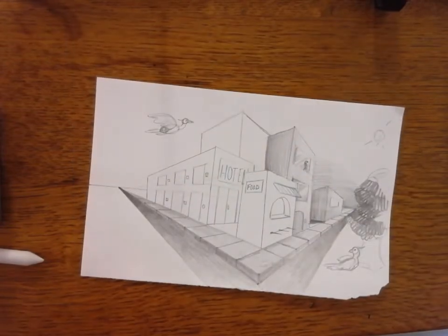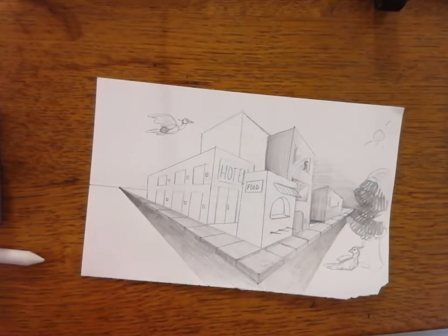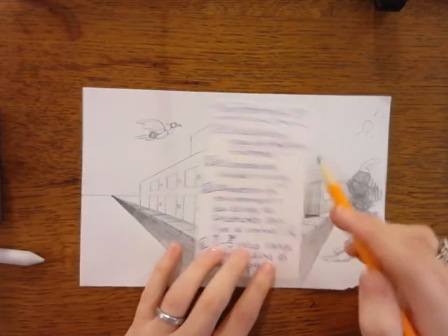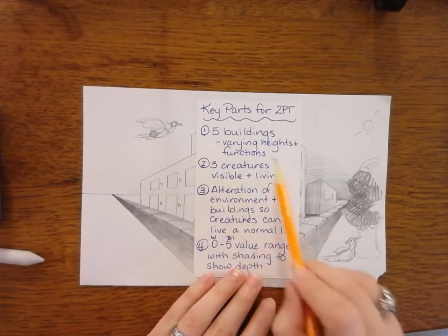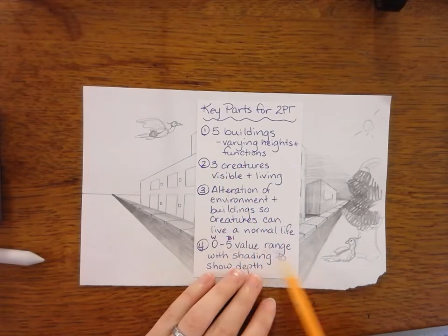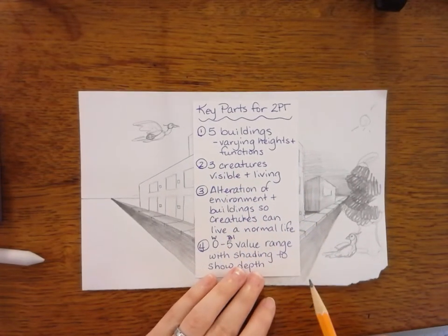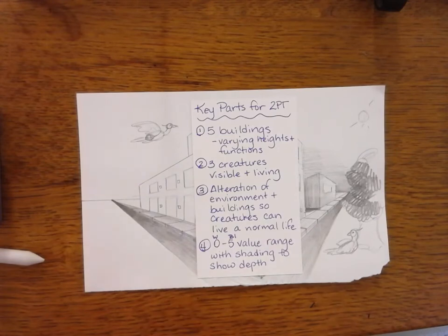Do not forget: five buildings, varying heights and functions, three creatures, alteration of the environment, and our zero to five value range. If you guys have any other questions for me, please let me know, call me on over, and I'd be glad to help. Bye.